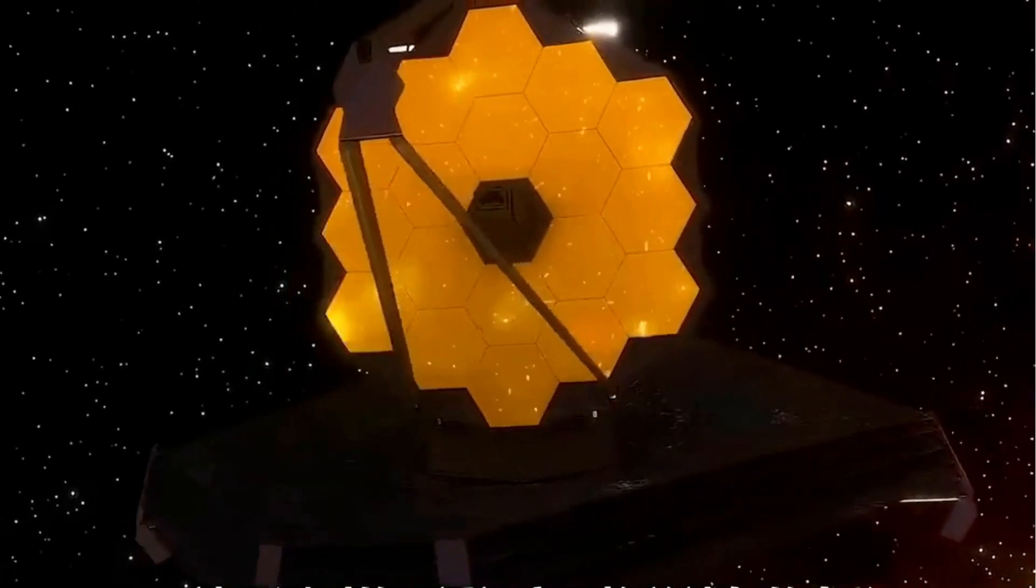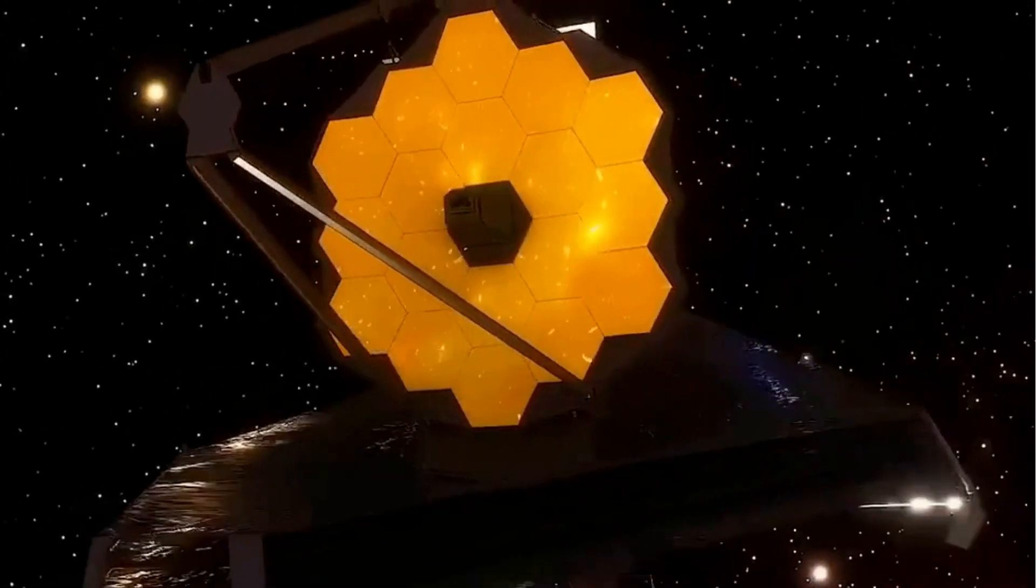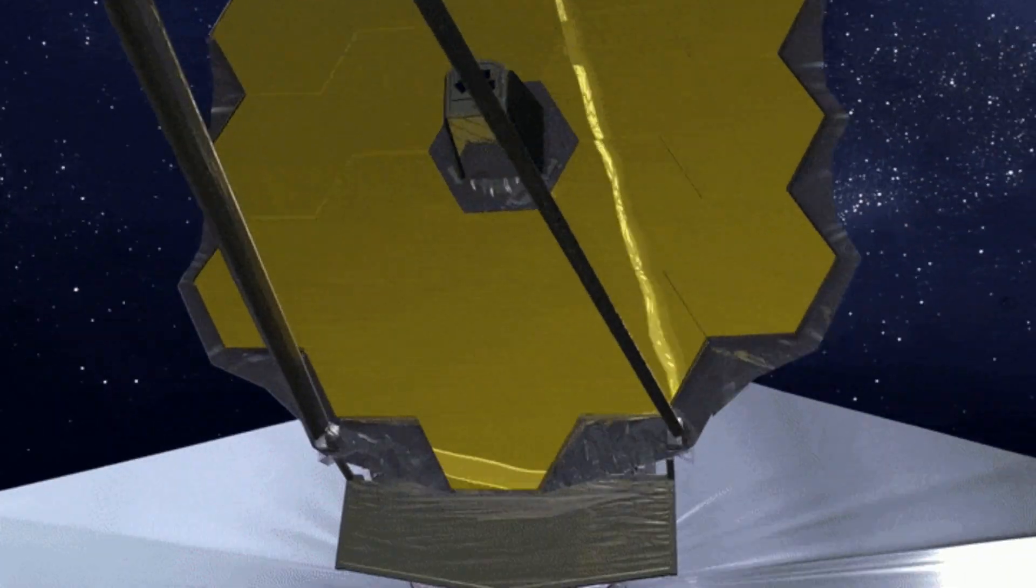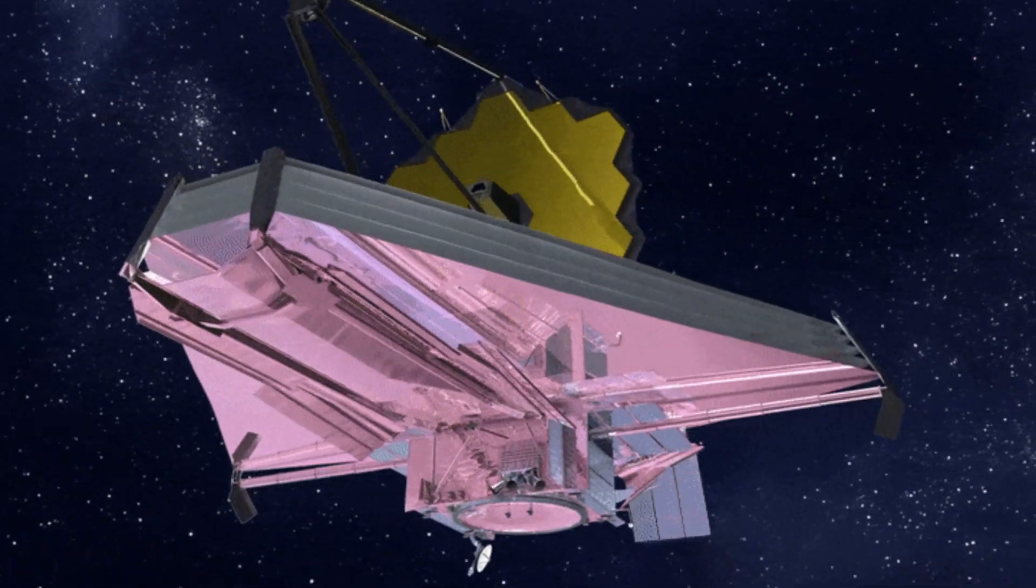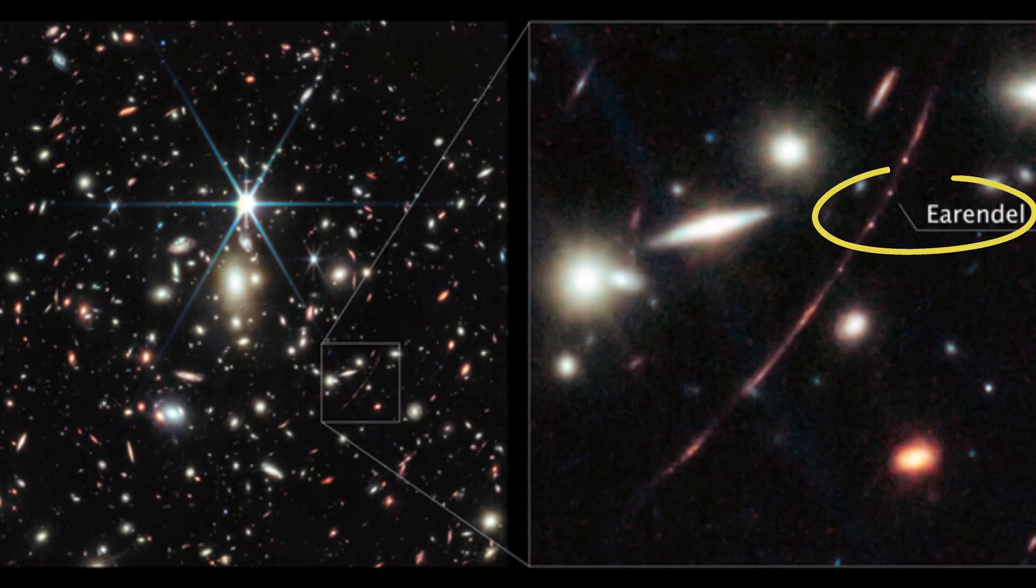This newly acquired insight reveals not only the remarkable properties of this celestial body but also provides clues about its potential stellar companion. Earendel, a star that had been previously detected by the Hubble Space Telescope, is an astronomical marvel due to its extraordinary distance from Earth.